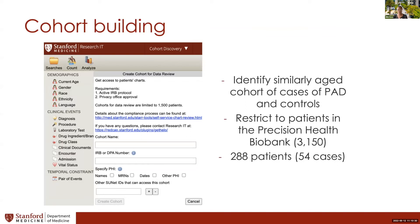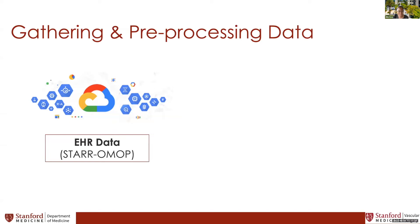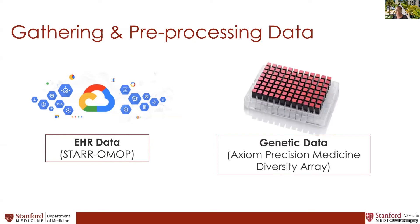The first goal was to identify patients with and without PAD of similar ages, restricting to those within the Precision Health Biobank — a feature added to the cohort discovery tool a few years ago. We ended up with about 288 patients, of which only 54 were PAD cases; some Biobank samples hadn't yet been added to the cohort discovery tool, and we used strict criteria to ensure cases truly had PAD. EHR data came from STARR-OMOP, and the genetic data needed processing through the Thermo Fisher Precision Medicine Array.